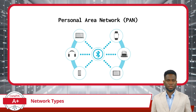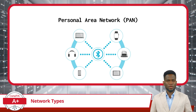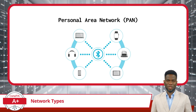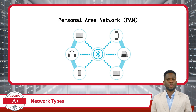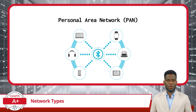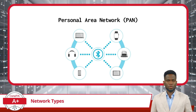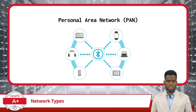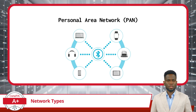A PAN is the smallest of the network types we will cover. It's designed for individual use within a range of a few meters. Imagine the wireless connectivity between your smartphone, your Bluetooth headset, and your smartwatch — that's a perfect example of a PAN. It's primarily used for personal devices to connect and communicate over short distances, often using wireless technologies like Bluetooth.